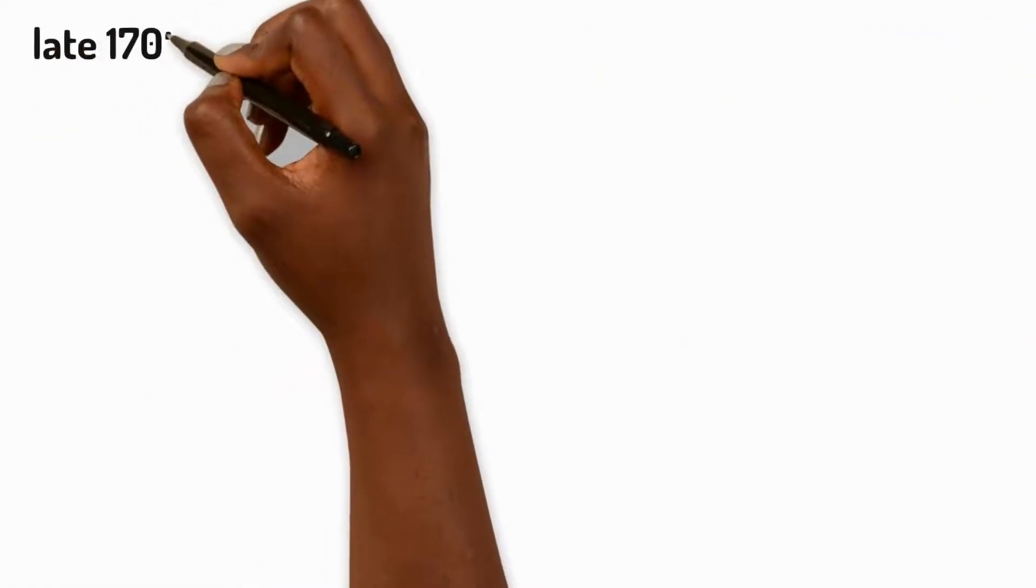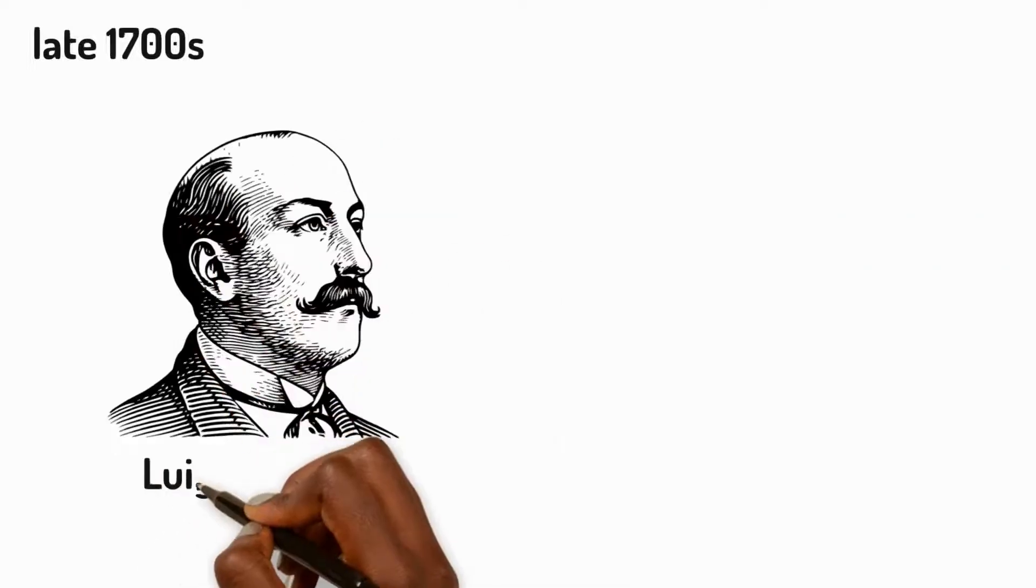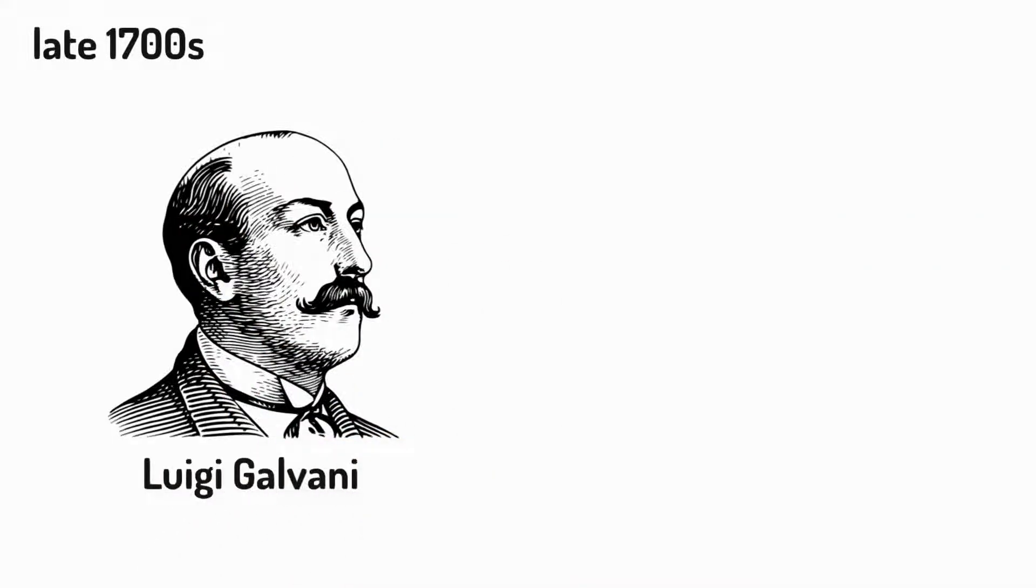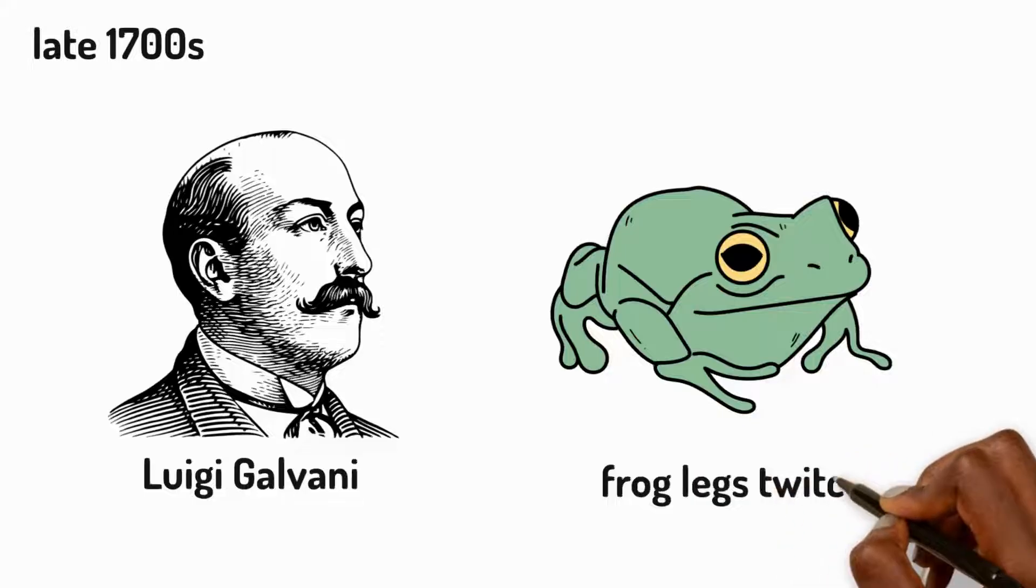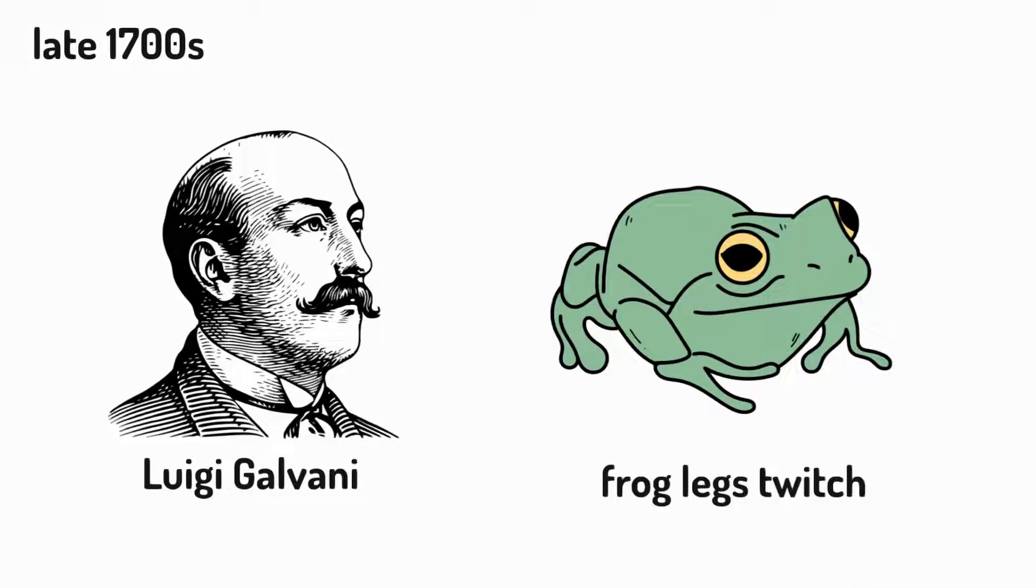In the late 1700s, an Italian scientist called Luigi Galvani discovered that electricity makes frog legs twitch. This suggested the presence of electricity in living organisms.